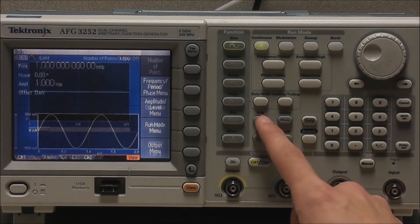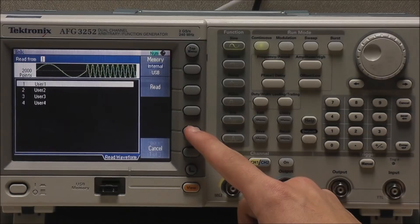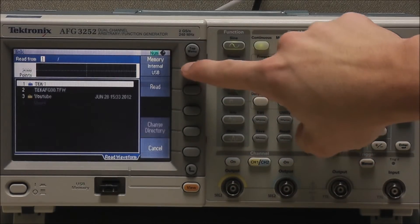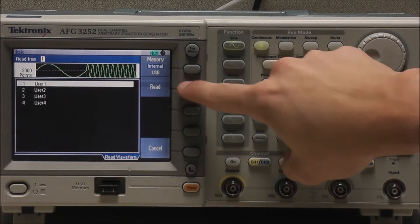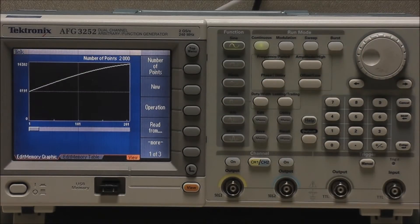In order to edit our saved files, we can recall them into the Edit Memory by selecting Edit, Read From, choosing internal or USB files, choosing our file, and Read. And now we're back into our Edit menu and we can alter our waveform any way we choose.